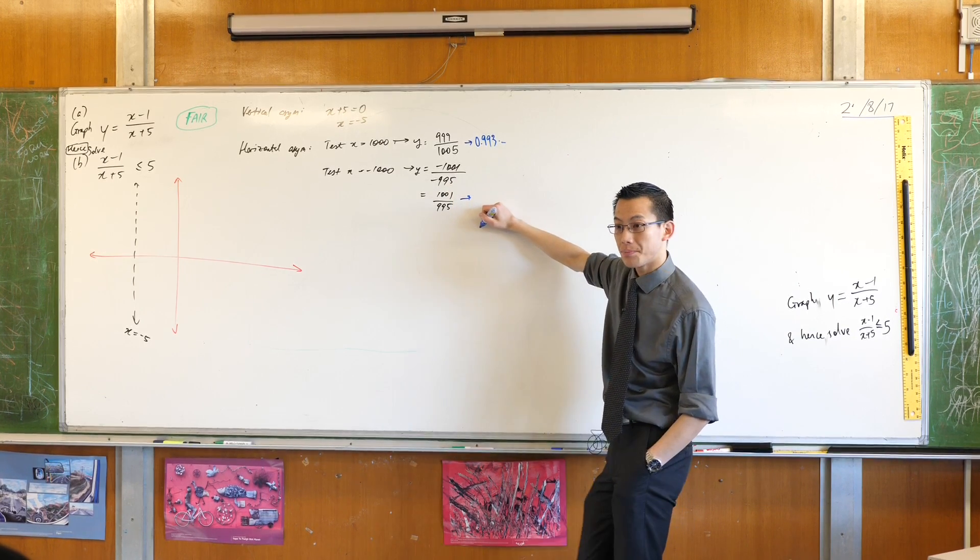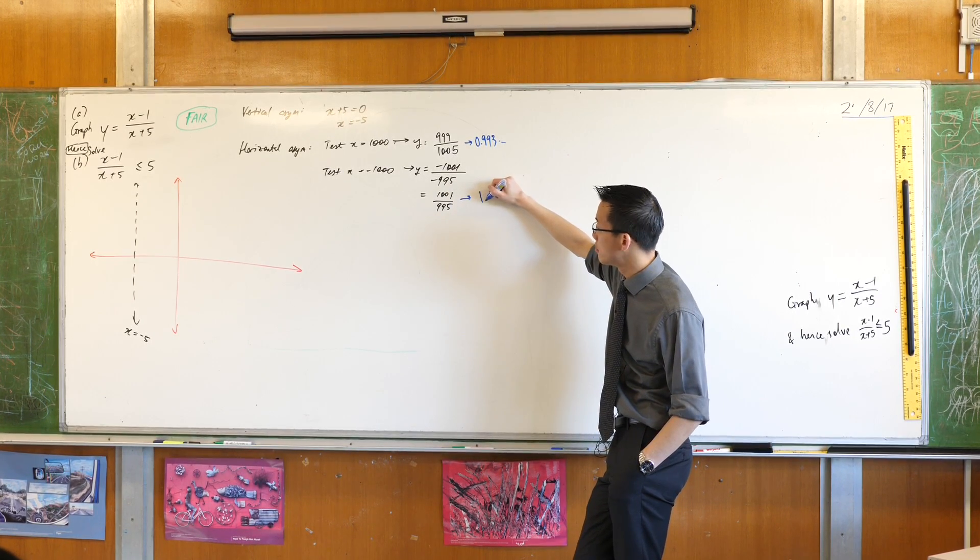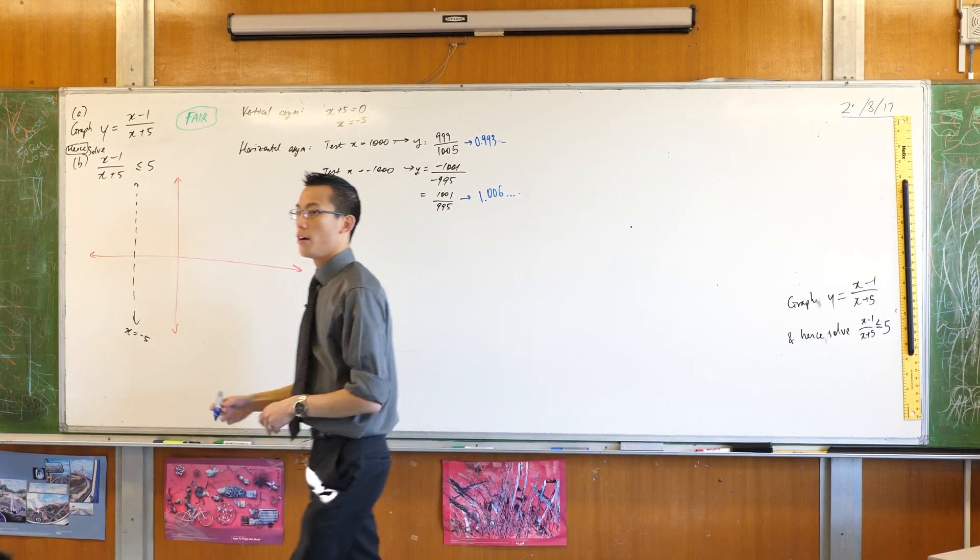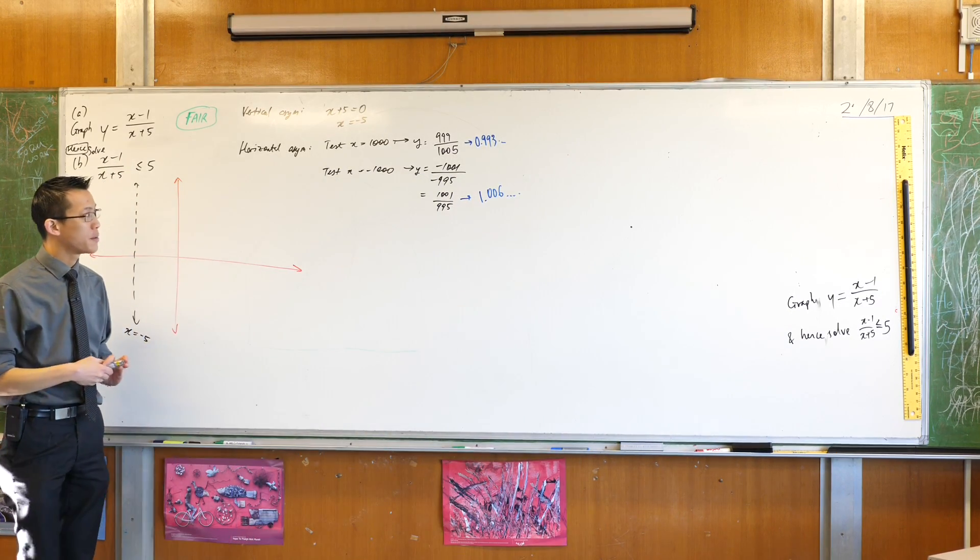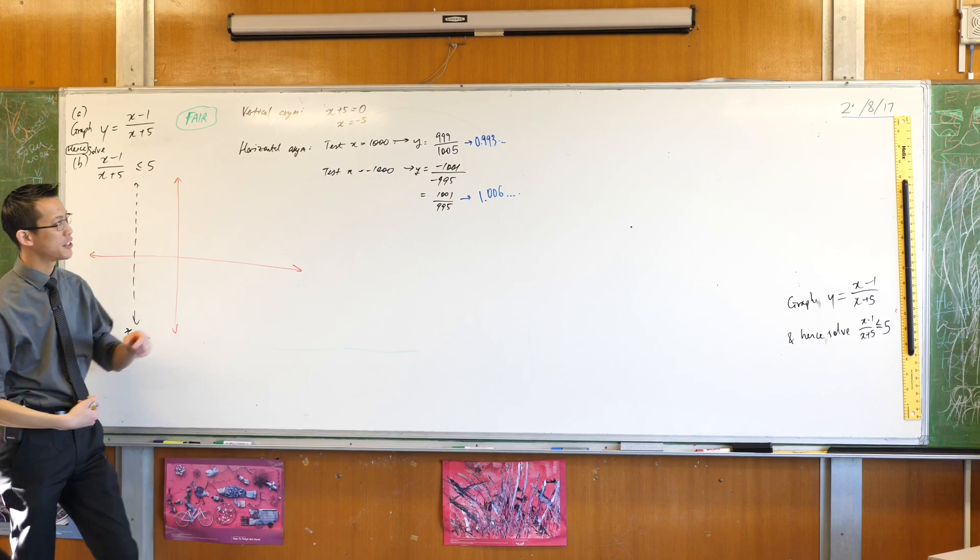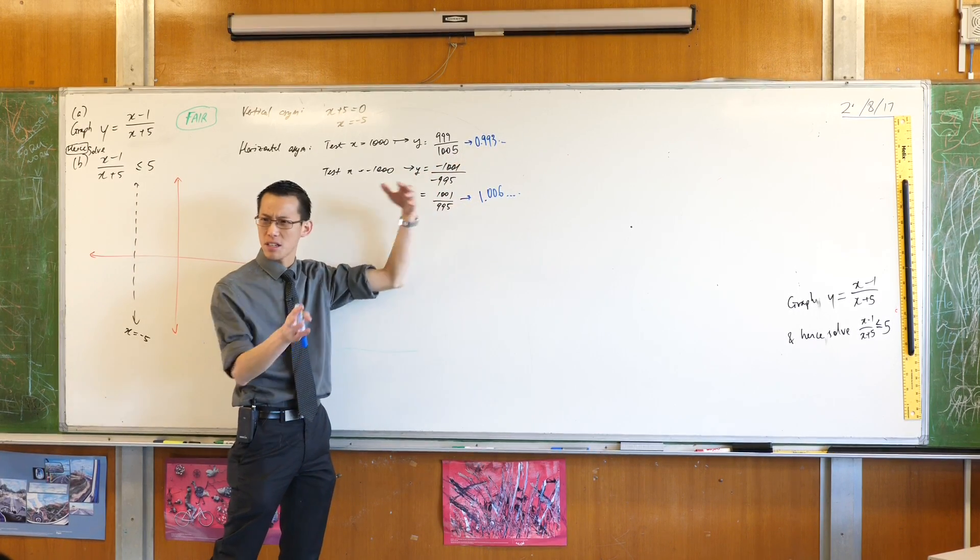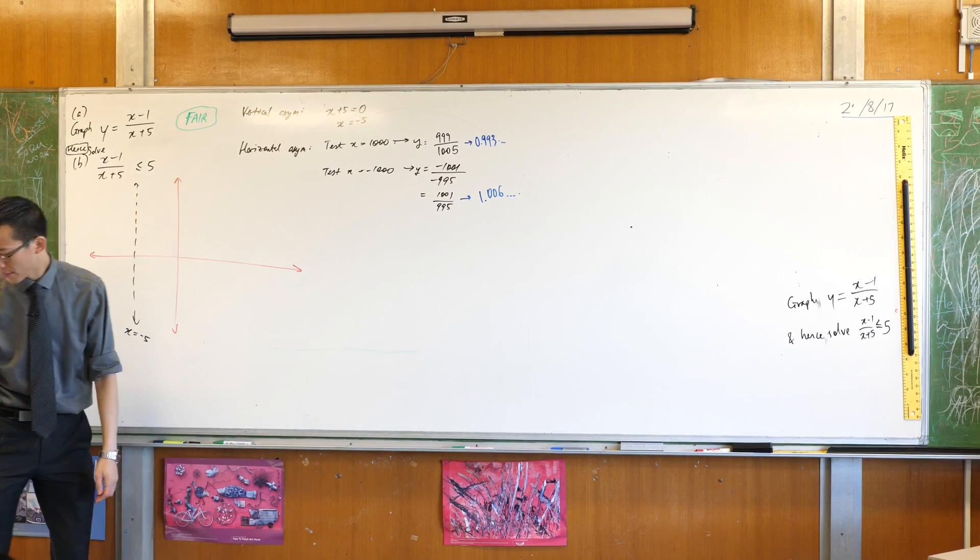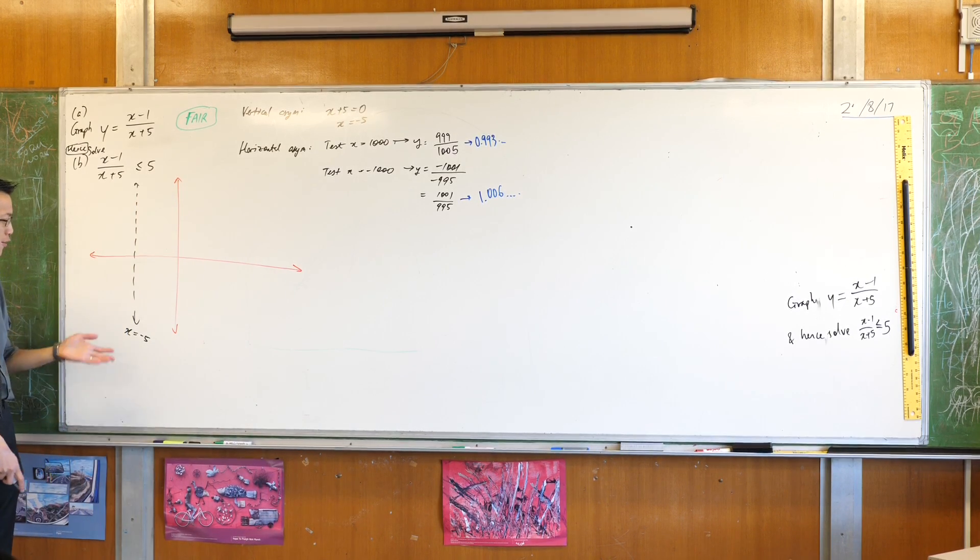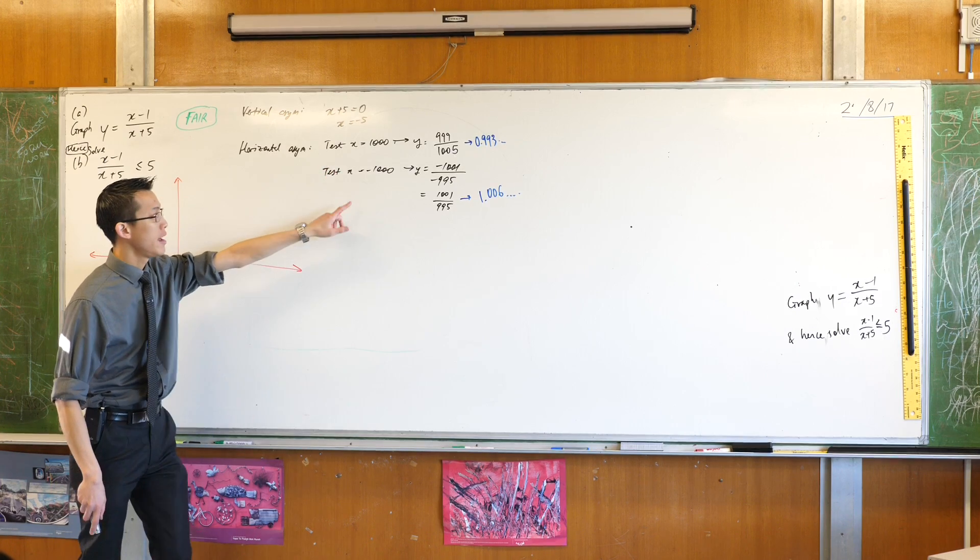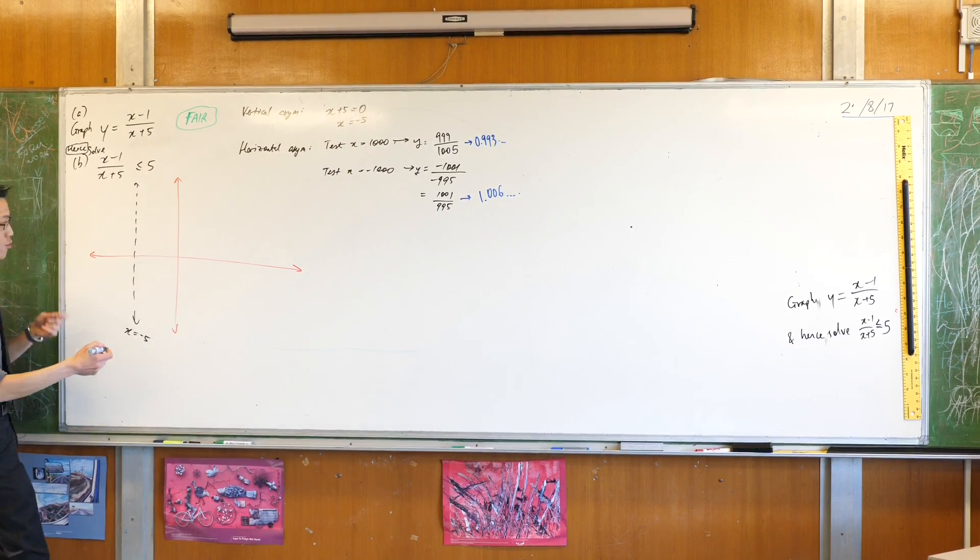Cool, dot, dot, dot. Now the only reason why I point this out is because you can work this out without the calculator, but you see this is just below one and this is just above, so that's going to be helpful when I draw this thing. So I've already decided that I've got a vertical asymptote, now I know there's also a horizontal asymptote, it's going to be at x equals one, so I'm just going to draw that in.